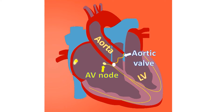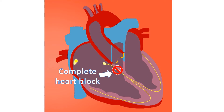Any of these causes of first degree AV block can progress to second degree or third degree complete heart block. Complete heart block or third degree AV block is a dangerous condition in which the electrical signals from the upper chambers do not reach the lower chambers. The lower chambers then beat at a much slower rate on their own, which can lead to dizziness, loss of consciousness, and sometimes even death if the lower chambers stop beating altogether.